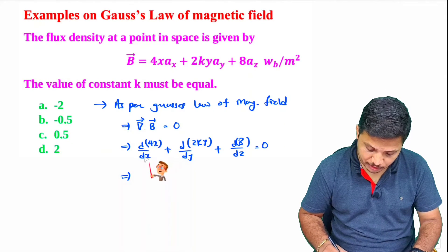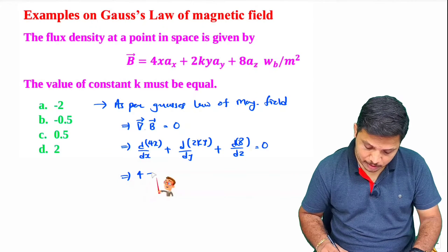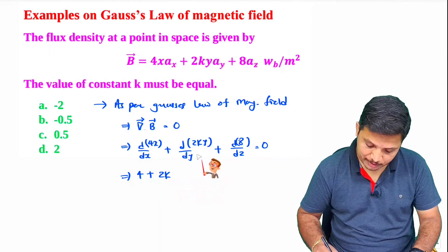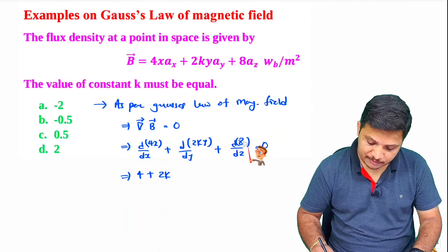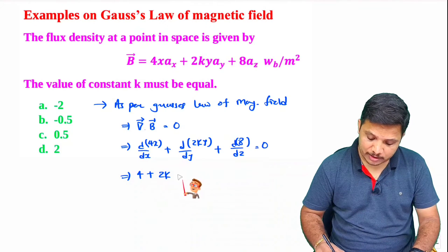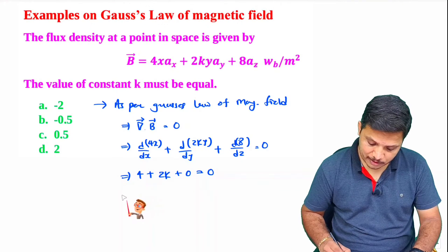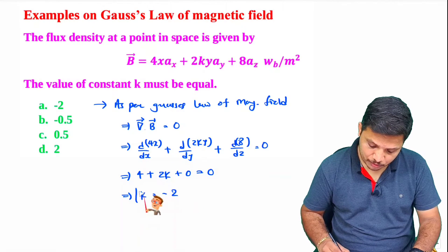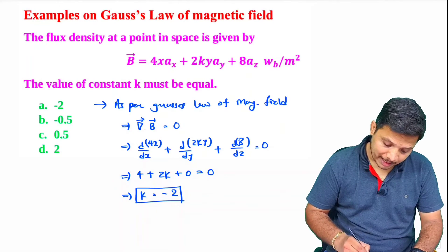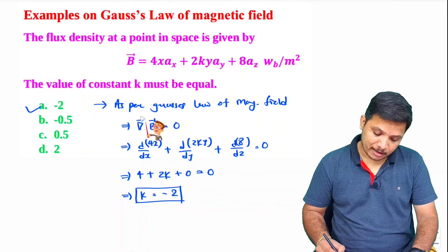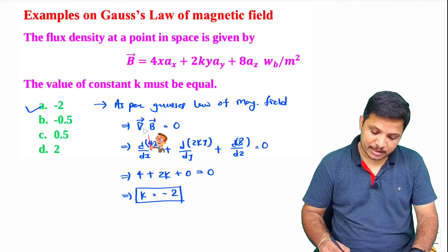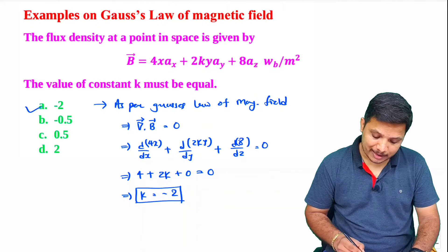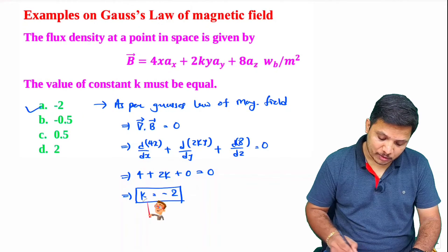Simplifying: the differentiation of 4x with respect to x is 4, plus the differentiation of 2ky with respect to y is 2k, plus the differentiation of 8 with respect to z is zero since 8 is a constant. So we have 4 plus 2k equals zero, giving k equals minus 2. By using Gauss's law for magnetic field — del dot B equals zero — the result is k equals minus 2.